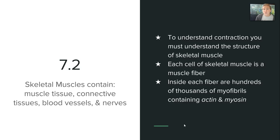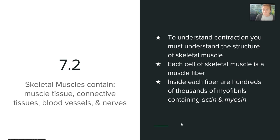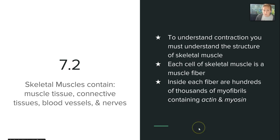Section 7.2 talks about the structure of the skeletal muscle. We have to have muscle tissue, connective tissues, blood vessels, and nerves, and we need to understand the structure in order to understand how contraction works. Each cell of the skeletal muscle is a muscle fiber, and in each fiber there are hundreds and thousands of organelles called myofibrils. They contain actin and myosin, which are very important to contraction.